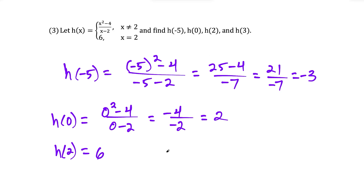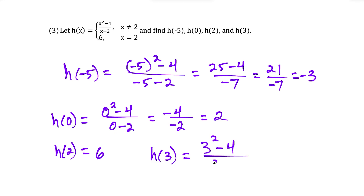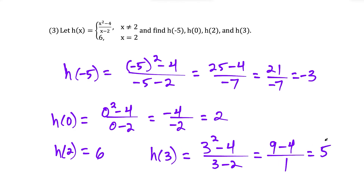Finally, for h of three, we plug into the top row: three squared minus four over three minus two. That gives us nine minus four over one, and nine minus four is five, so five divided by one is five. So h of three is equal to five.